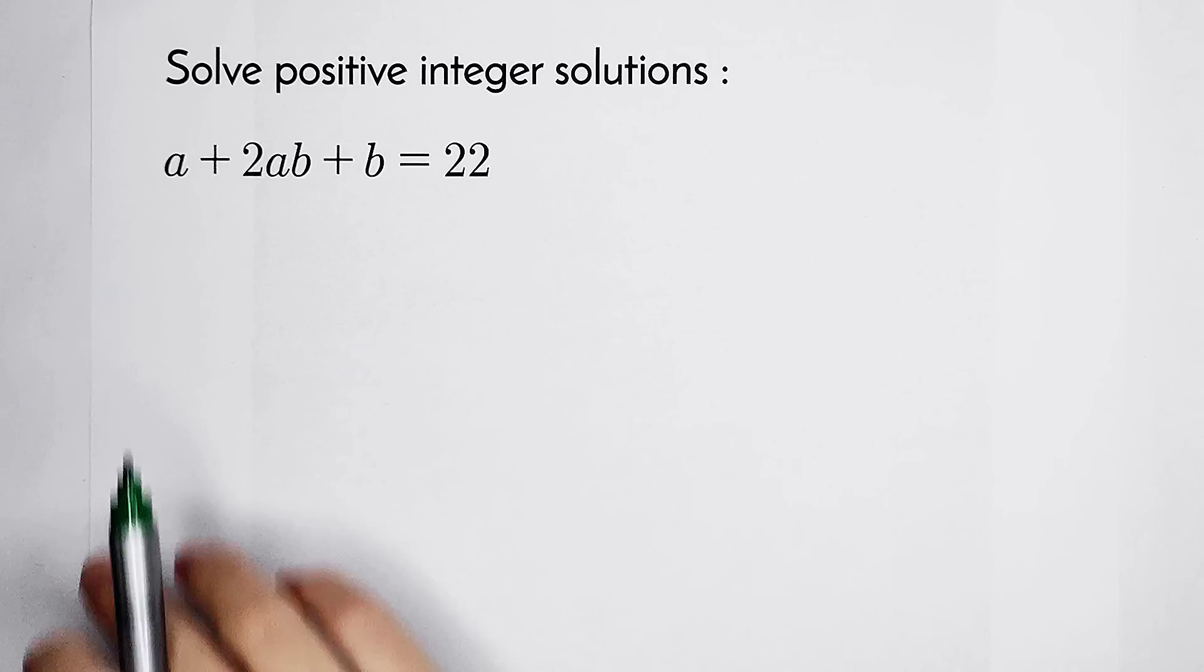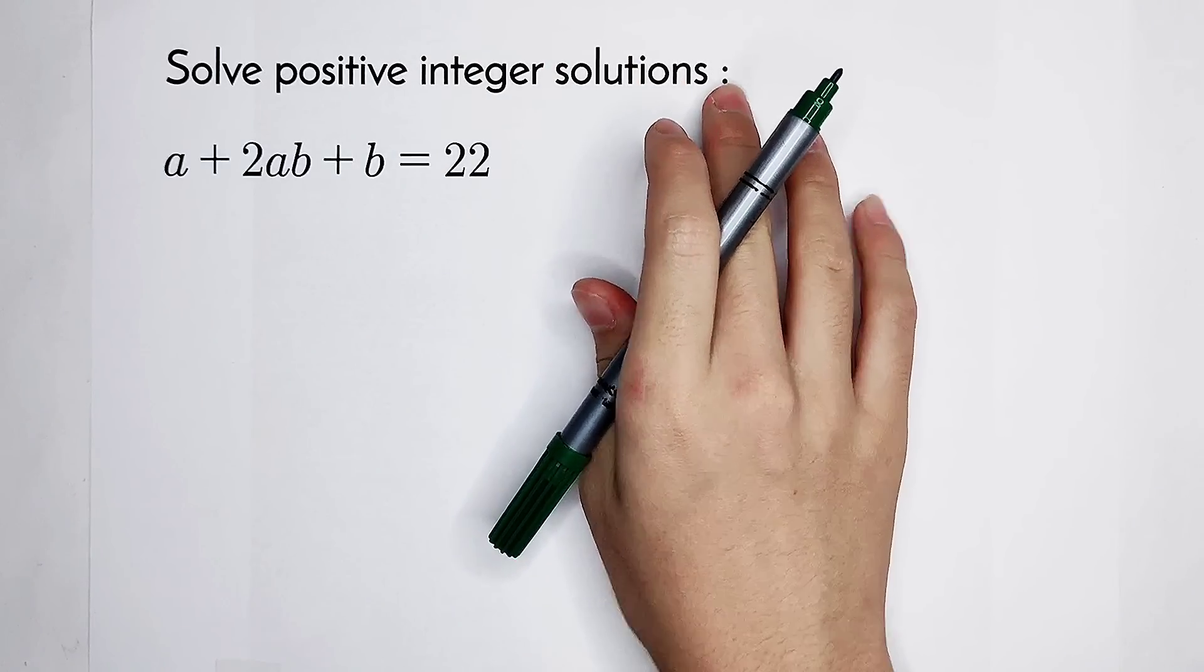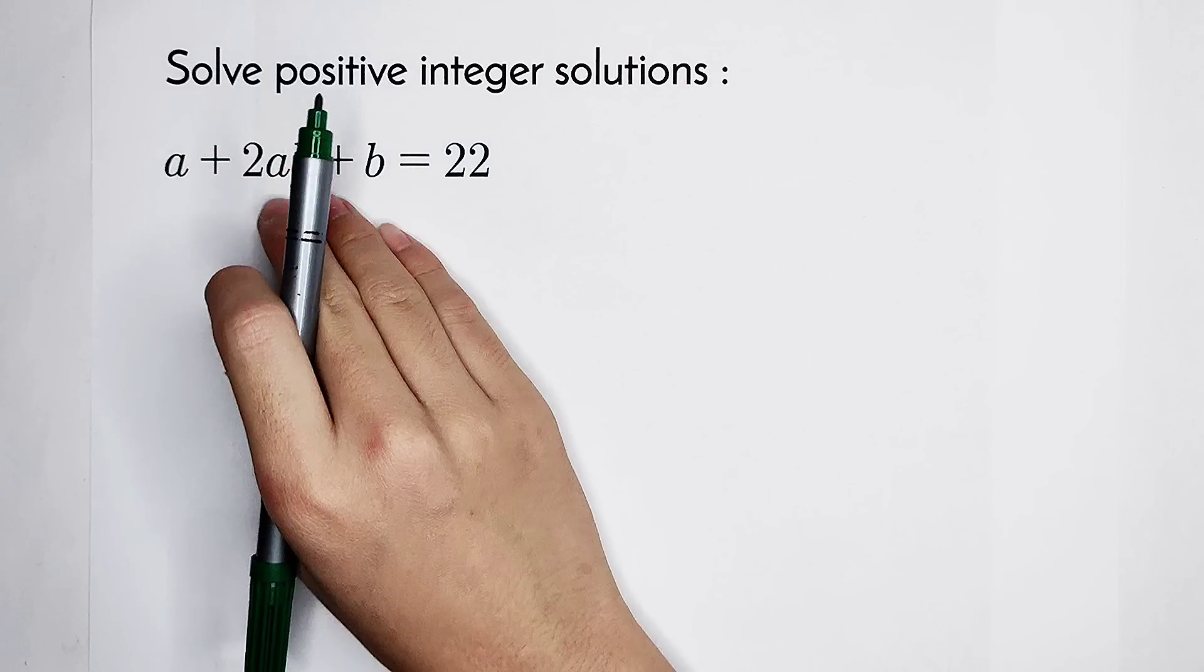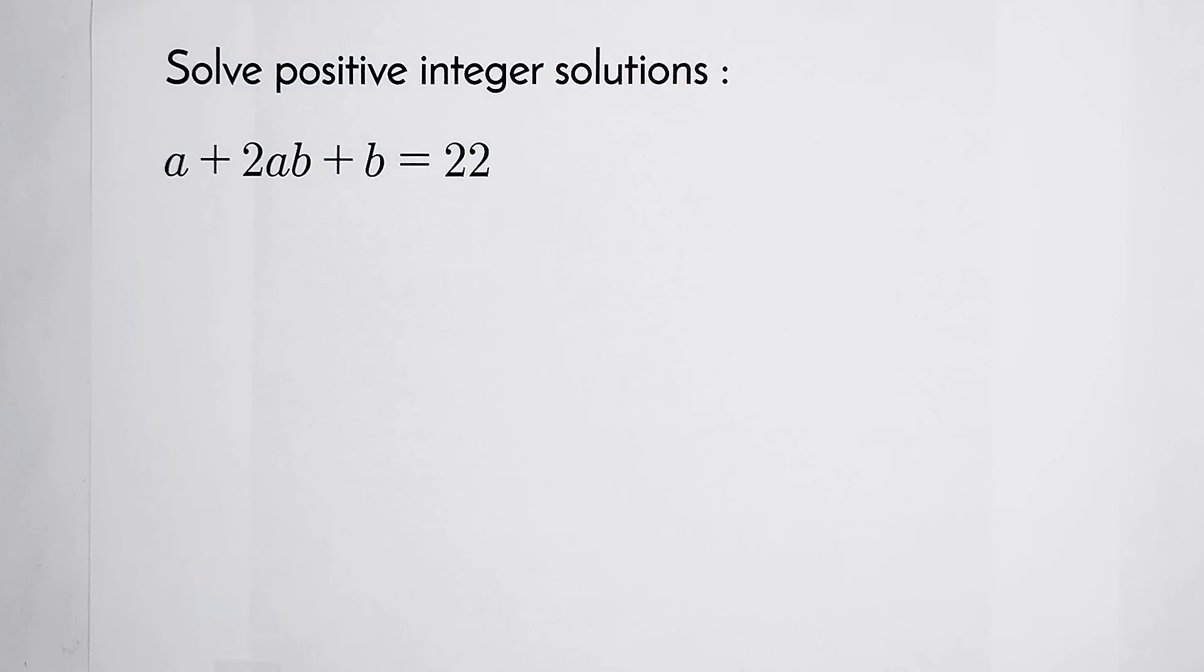Welcome back to Math window. Solve the positive integer solutions of this equation: a plus 2ab plus b is equal to 22.